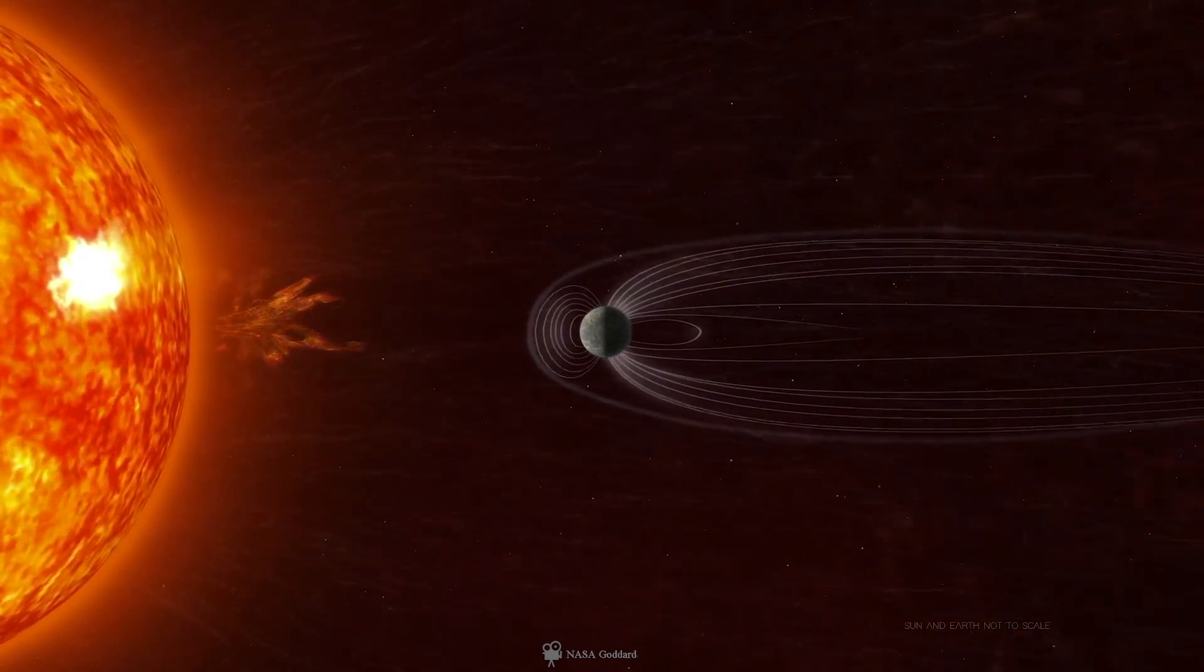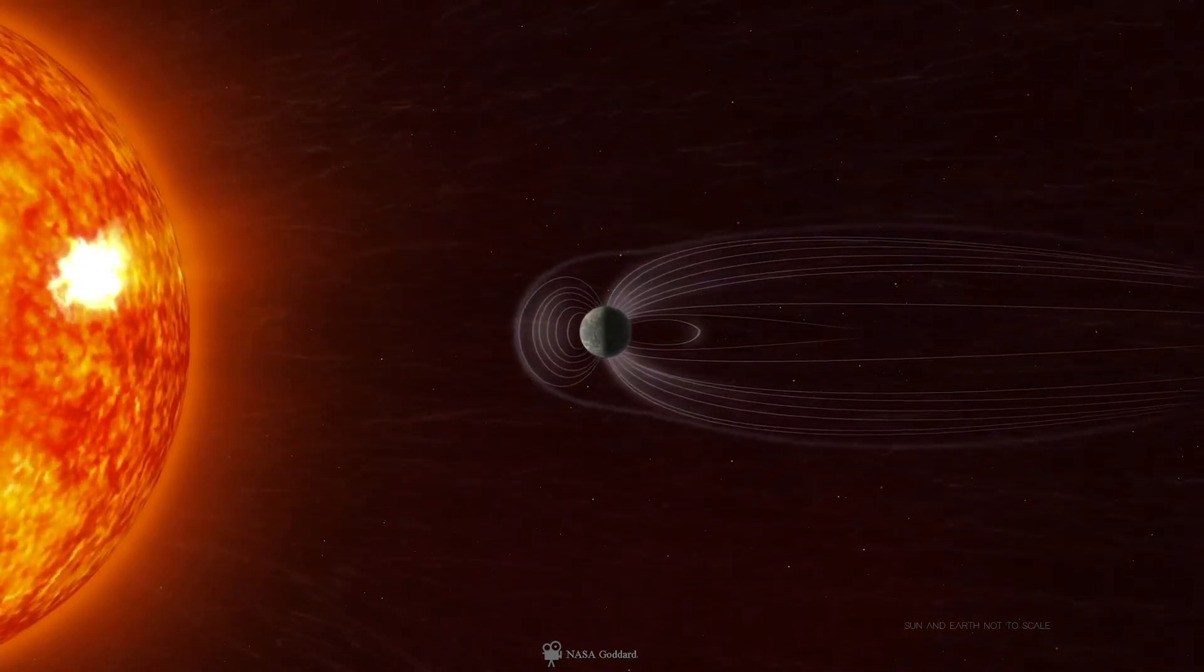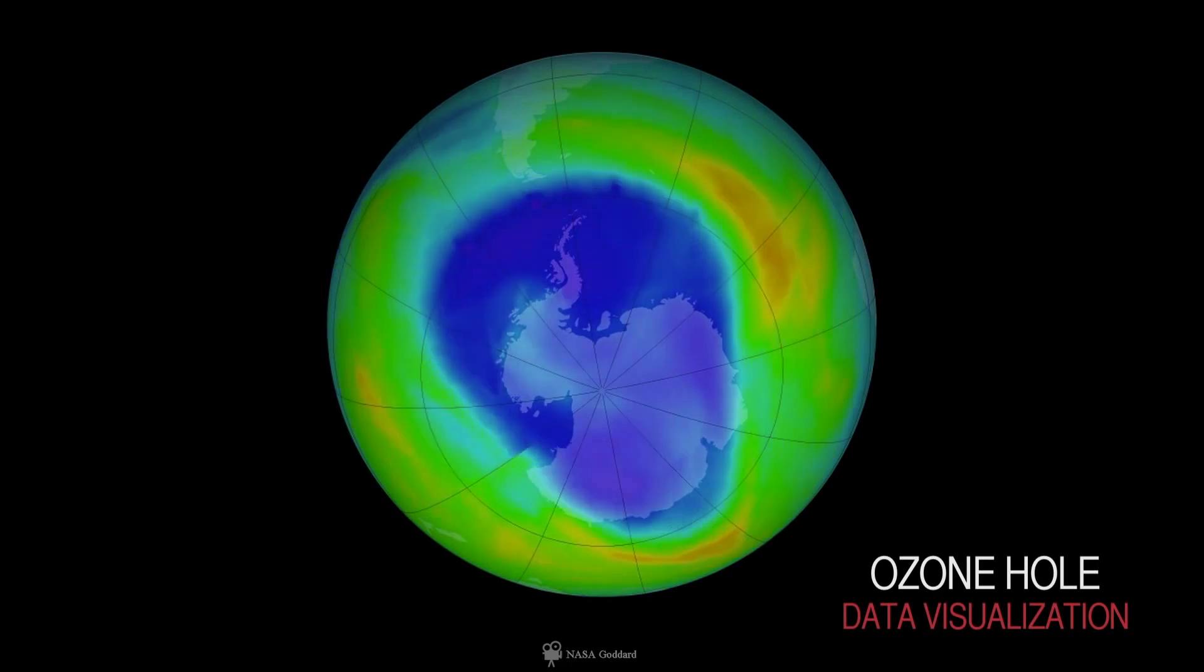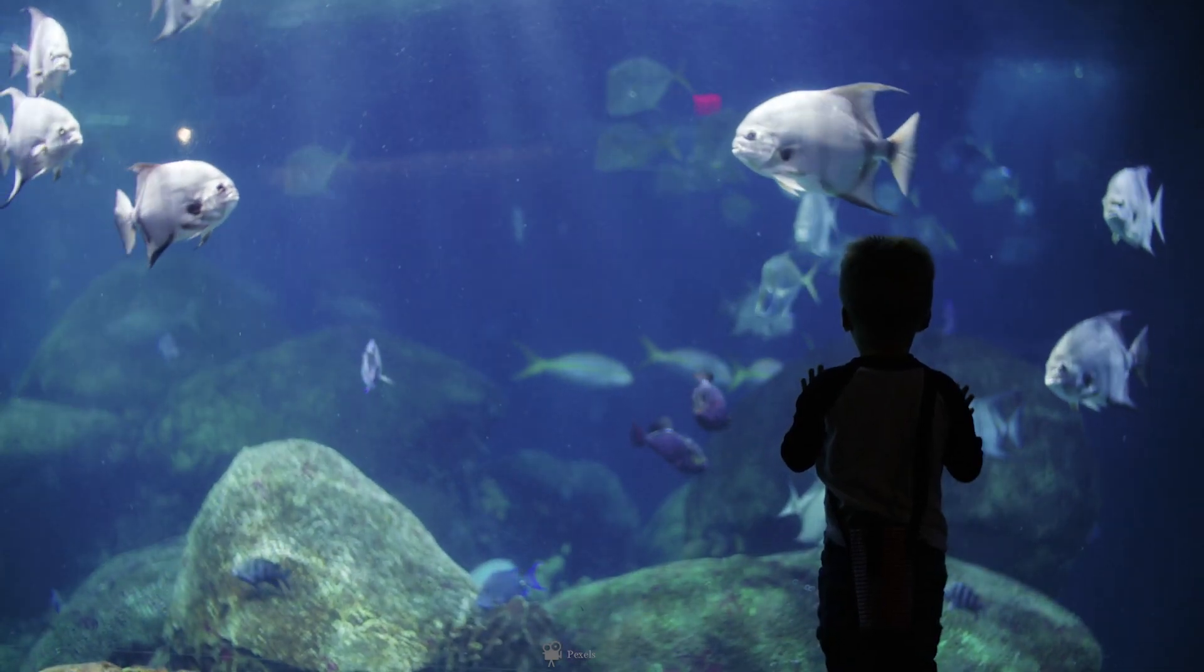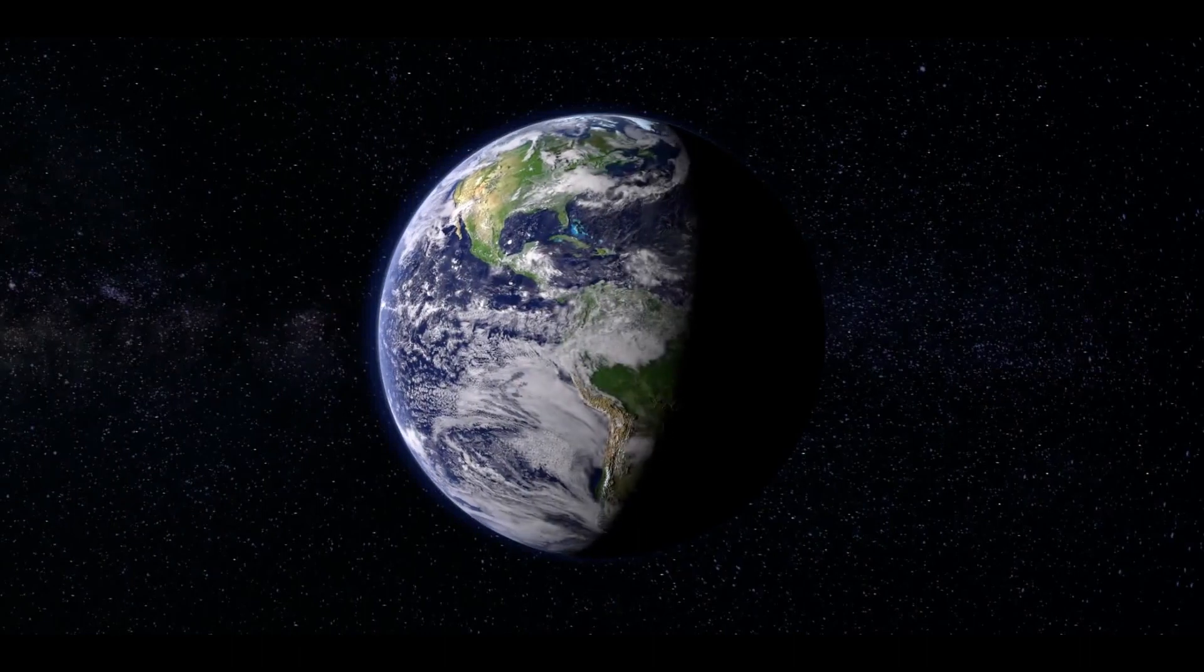So if the magnetic field of the Earth is gone, the surface of the Earth will be constantly bombarded with charged particles from solar flares. There will be no ozone, the atmosphere will slip off slowly, and therefore no life. Our blue planet will become like Mars.